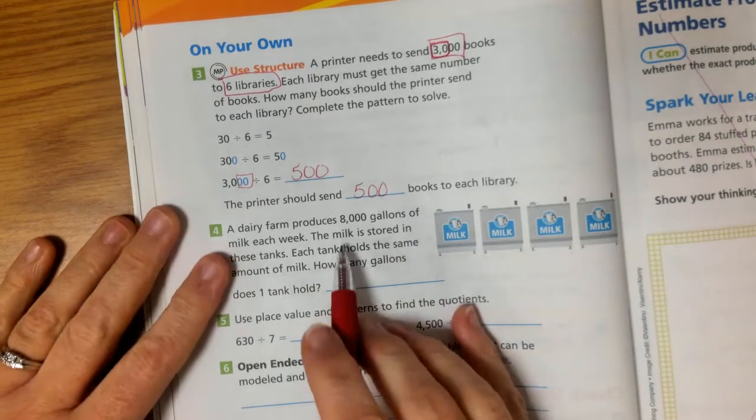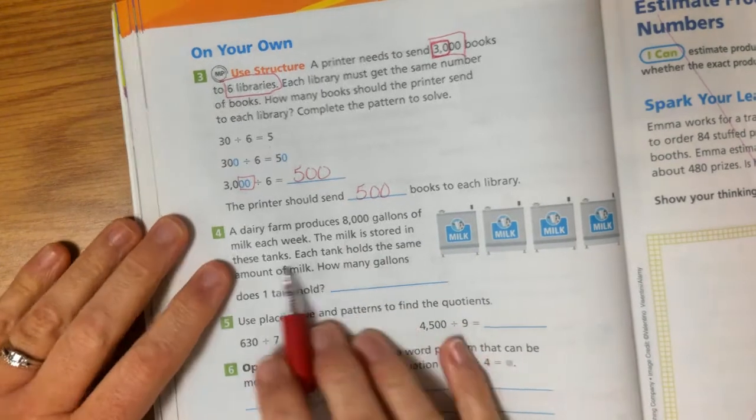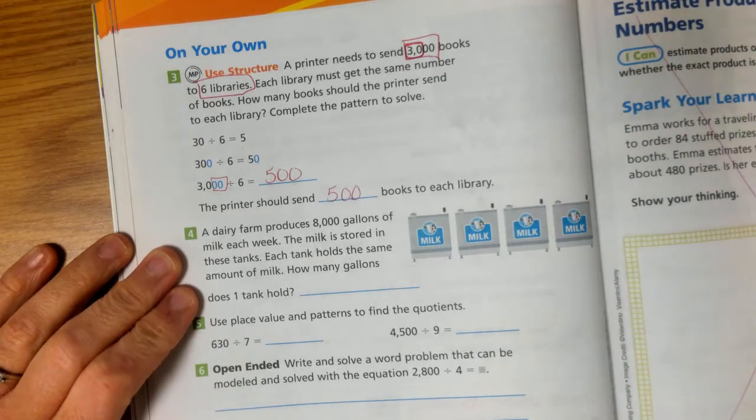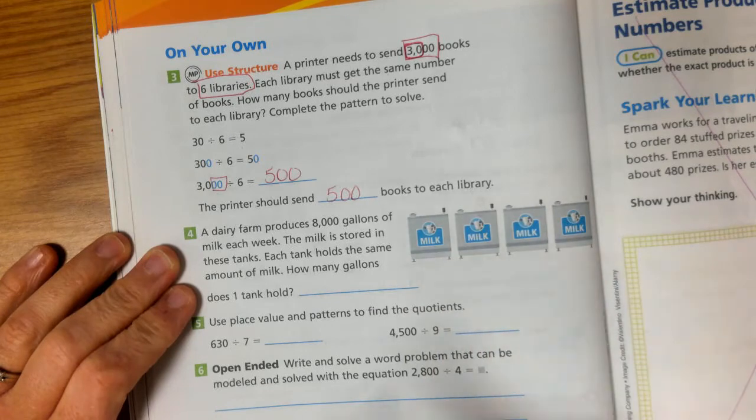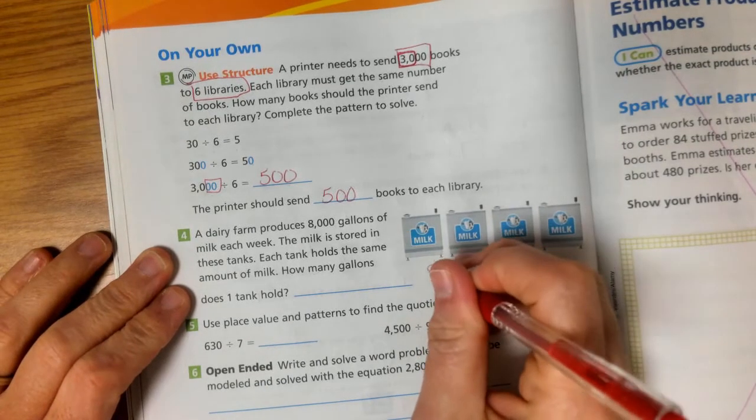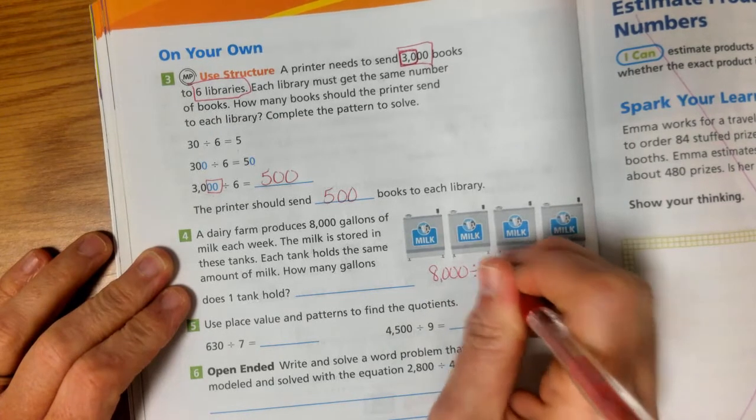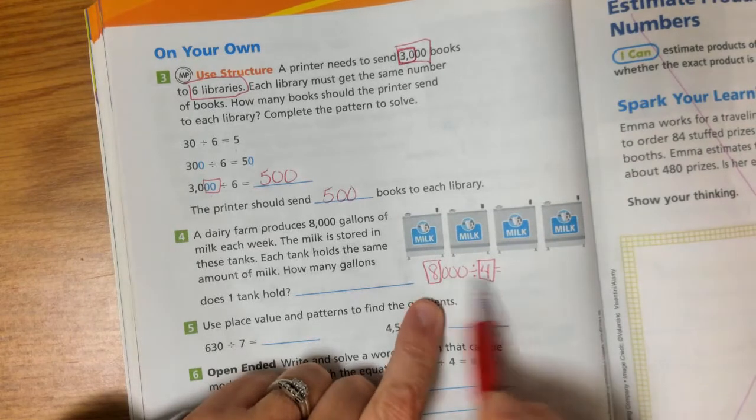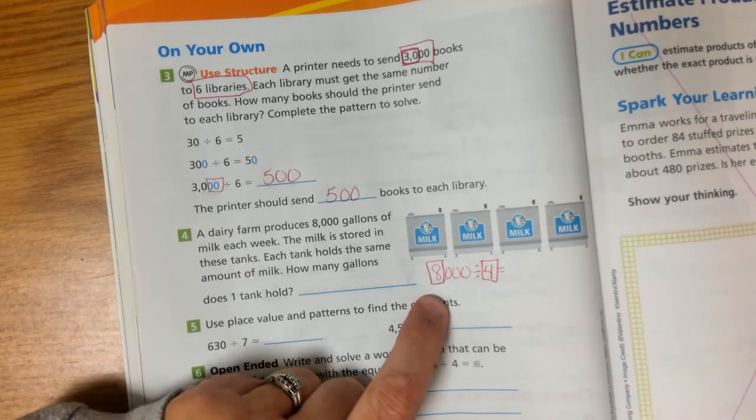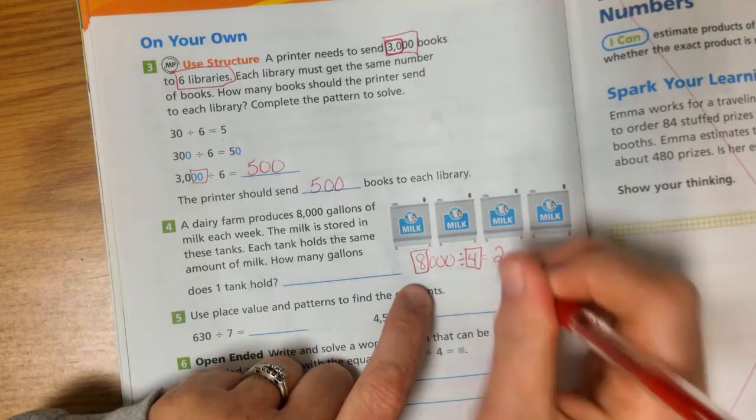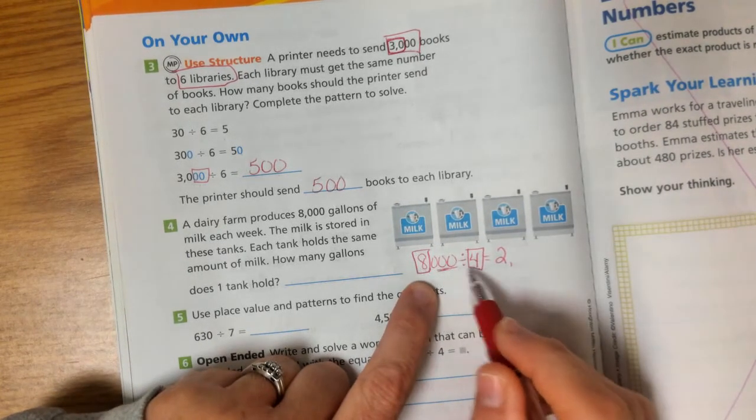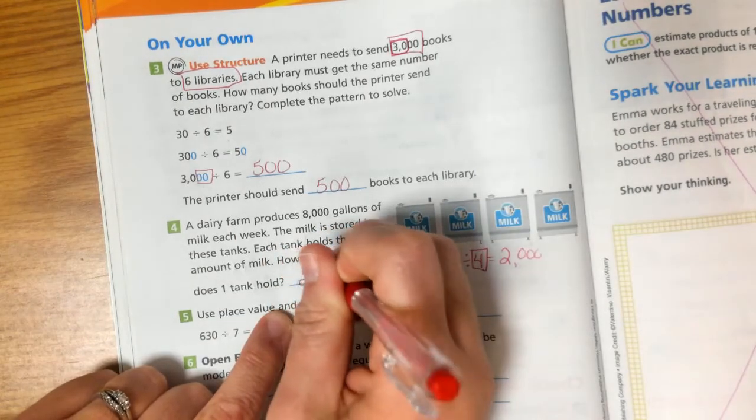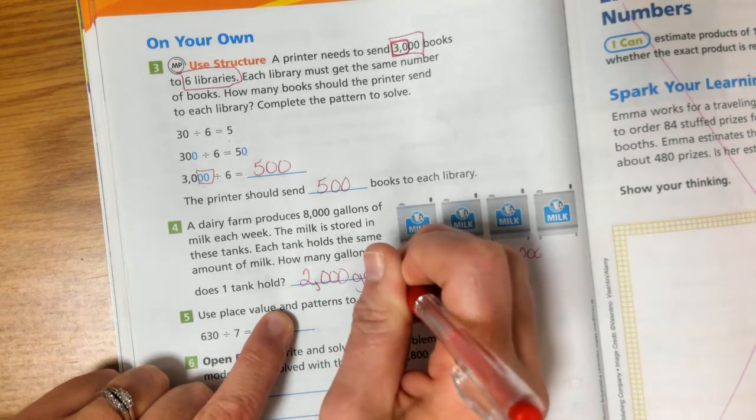A dairy farm produces 8,000 gallons of milk each week. The milk is stored in these tanks. Each tank holds the same amount of milk. How many gallons does one tank hold? Well, how many tanks do we have? 1, 2, 3, 4. So my problem here is 8,000 divided by 4. Well, first, I notice something in common with my 8 and my 4. 8 divided by 4 equals what? 2. So I have 8 thousands divided by 4 would equal 2 thousands. So each tank holds 2,000 gallons of milk.